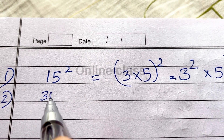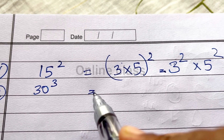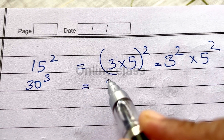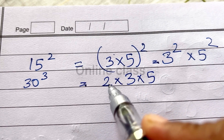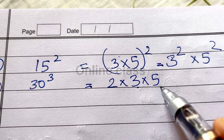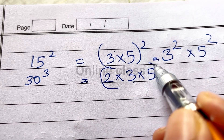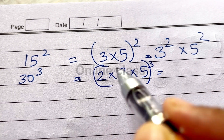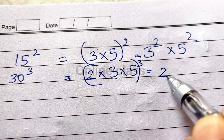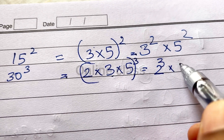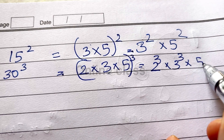Next is 30 cube. Now we will answer the question. 2 into 3 into 5: 2 into 3 is 6, and 6 into 5 is 30. So 30 cube becomes 2 cube into 3 cube into 5 cube.